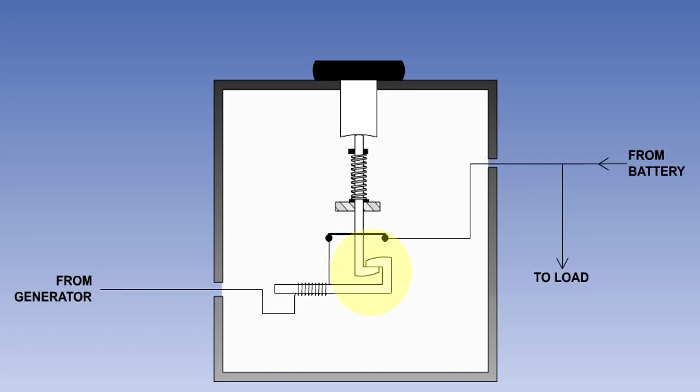The reverse current circuit breaker contains a latch mechanism, which is holding a set of contacts closed. The latch mechanism is held closed magnetically. A coil wound around the latch mechanism produces a magnetic field, which helps to hold the mechanism latched when the current flow is in the normal direction.